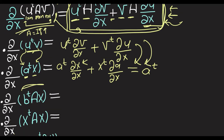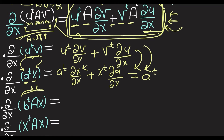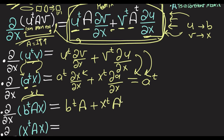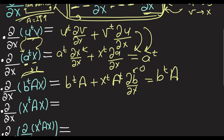Now, how about ∂/∂x of b-transpose Ax? We replace all u with b and all v with x. So we get b-transpose A times ∂x/∂x, which is I, plus x-transpose A-transpose times ∂b/∂x, which is zero. This gives us b-transpose A.